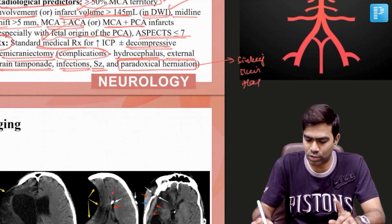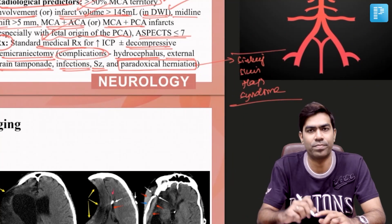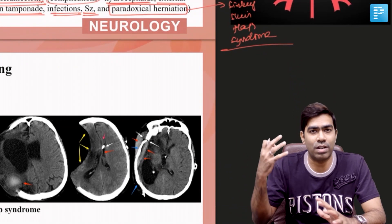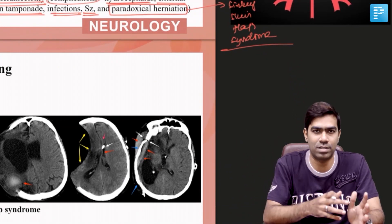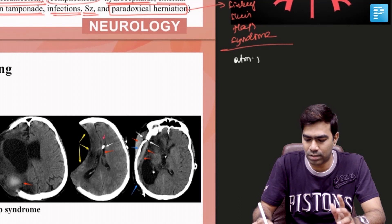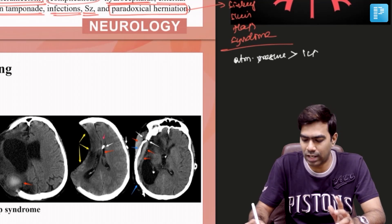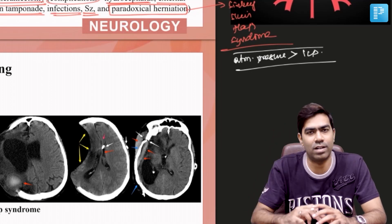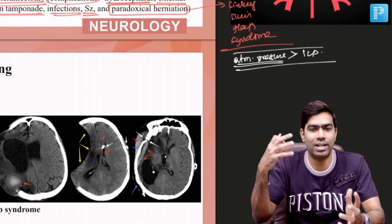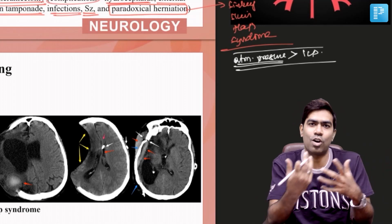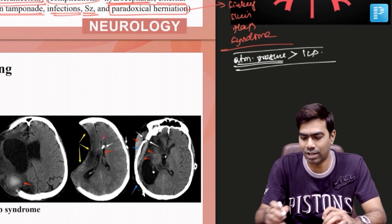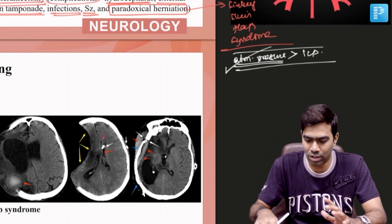Most importantly — and likely to be asked in exams — is paradoxical brain herniation, also called sinking skin flap syndrome (SSFS). This occurs because over time, the infarcted tissue is destroyed by liquefactive necrosis and replaced with fluid. In this situation, atmospheric pressure can exceed intracranial pressure in the infarcted area, compressing brain tissue and pushing the midline toward the opposite side, causing contralateral midline shift and potentially contralateral brain herniation.